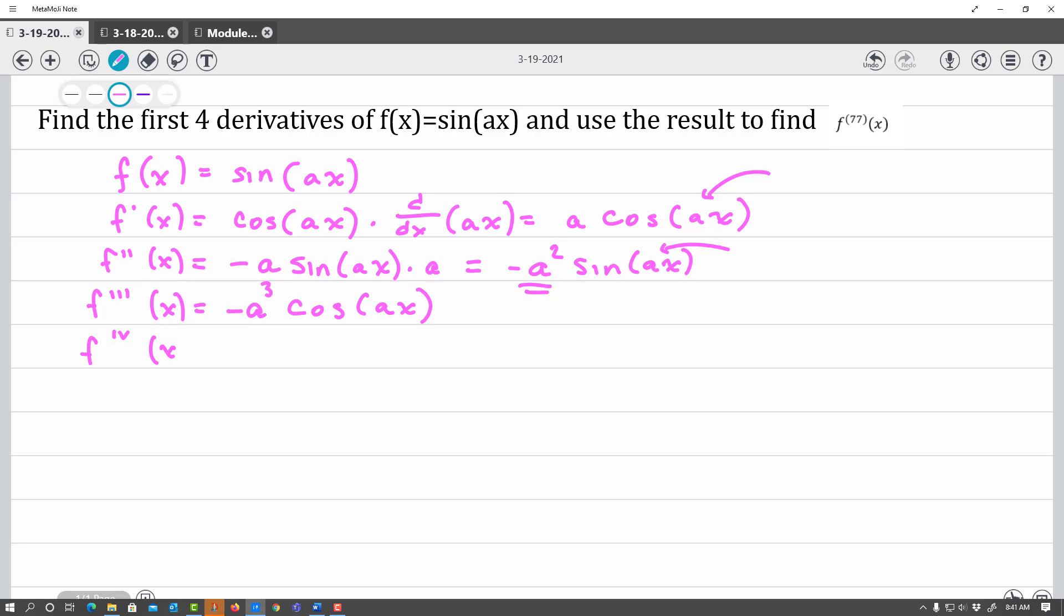If I take the fourth derivative, the derivative of cosine is negative sine. A negative and a negative is a positive. Now notice the fourth power sine. You can see the pattern happening with the exponent.